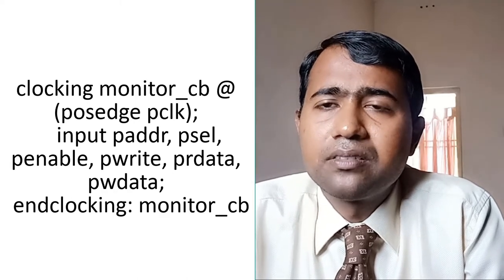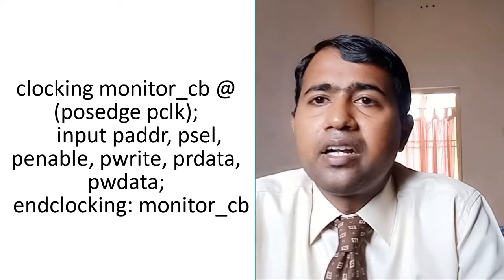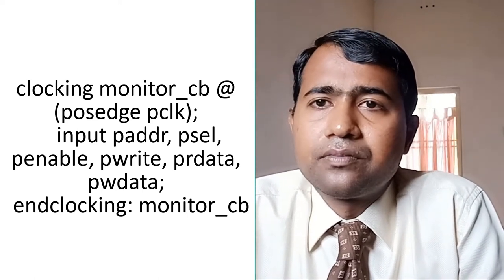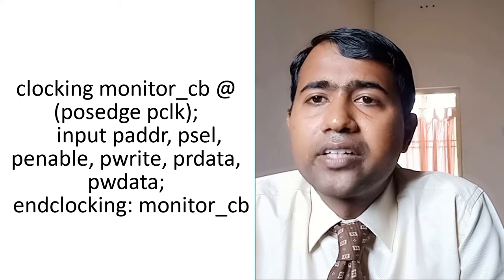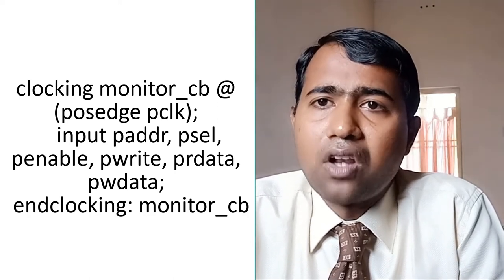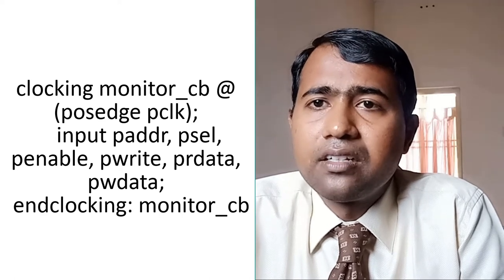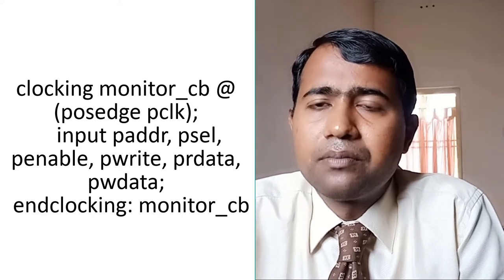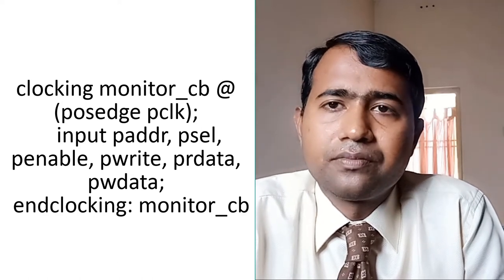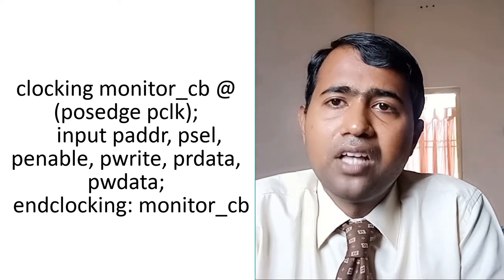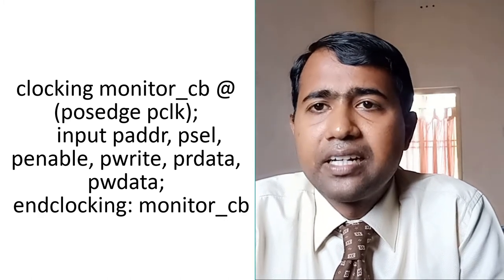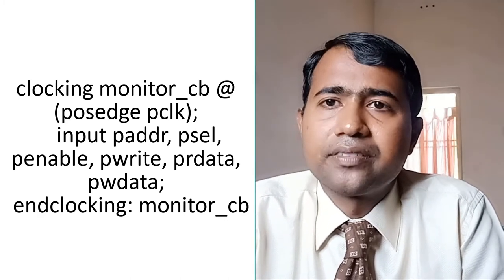Here I have named the arbiter clocking block as 'passive'. Next, we declare the clocking block for the monitor: 'clocking monitor_cb @(posedge clock); ... endclocking'. Inside the monitor clocking block, I have declared only input signals, because the monitor does not drive output signals. Those signals have been declared like this — endclocking.